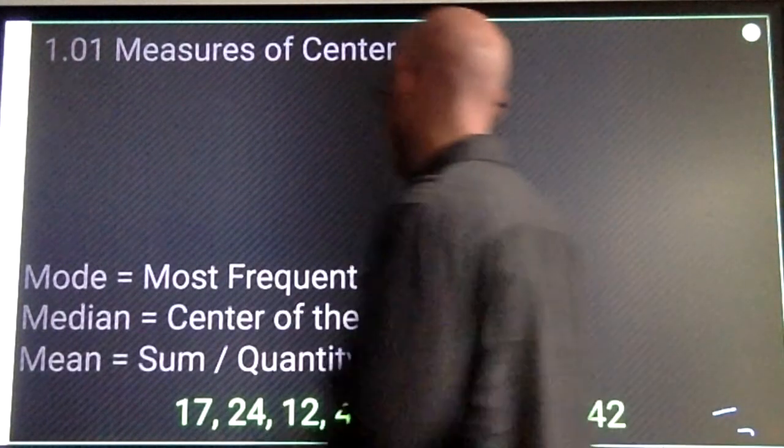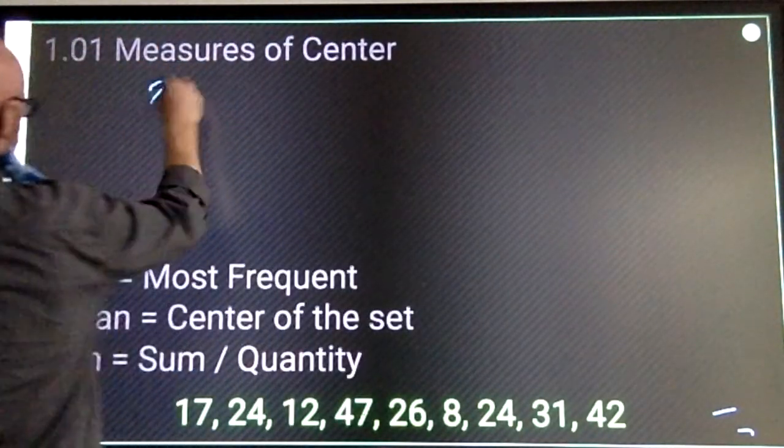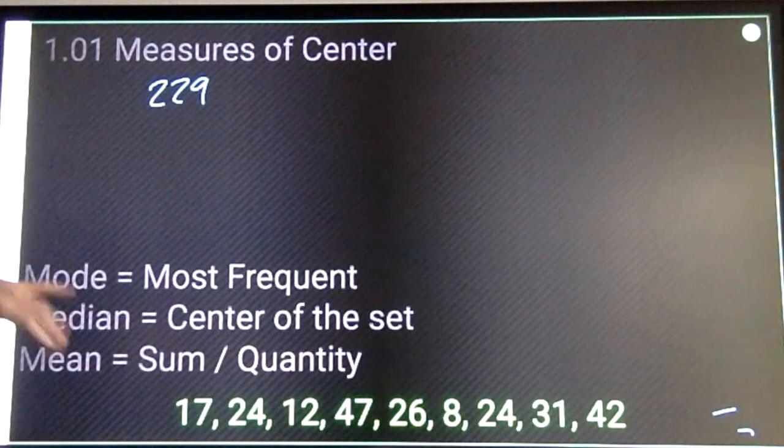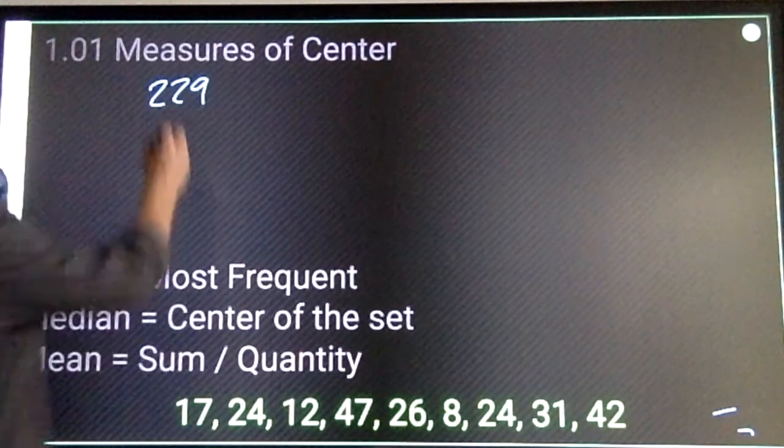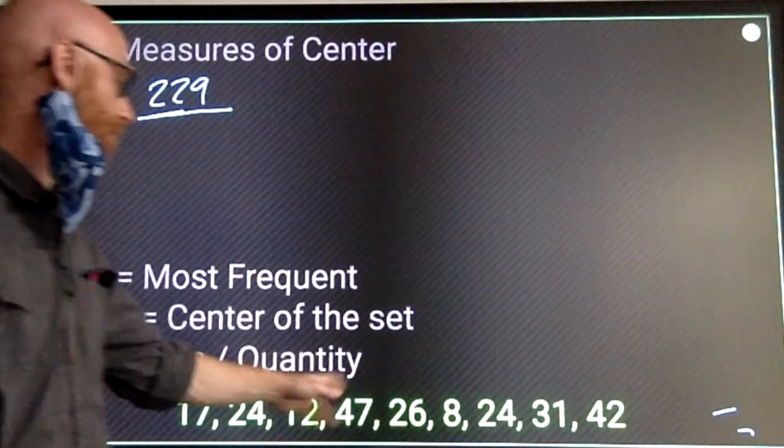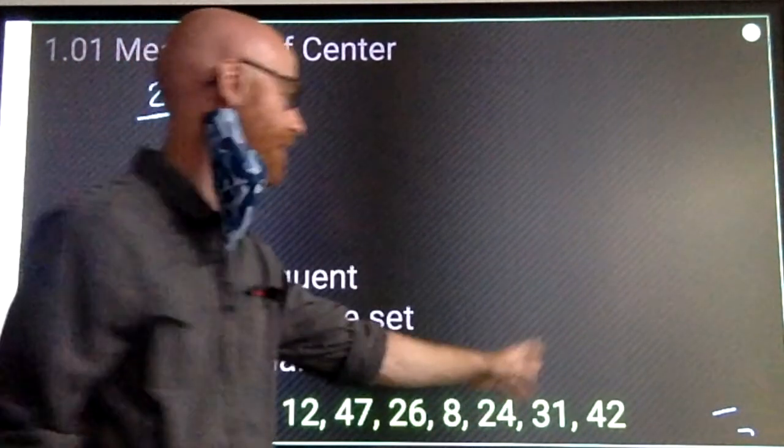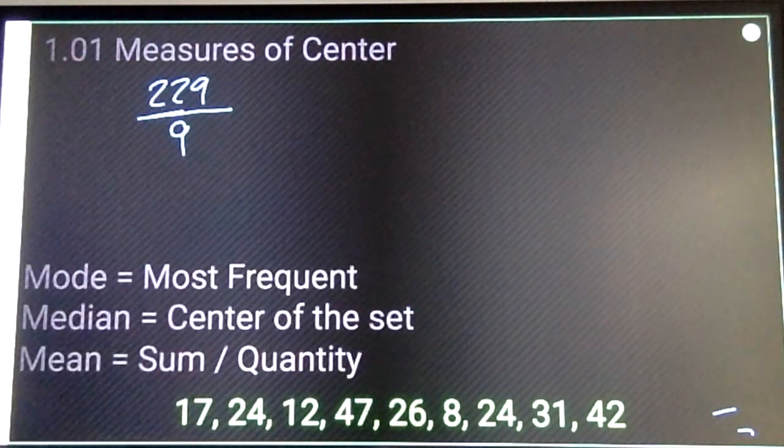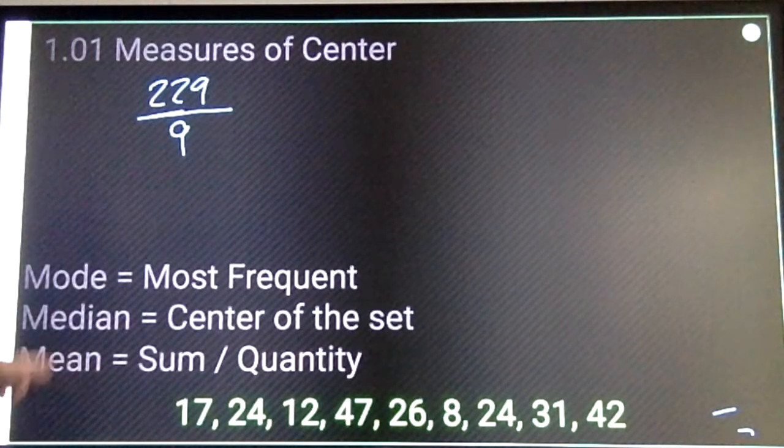If I add these numbers up, the sum is 229, unless I add it incorrectly, in which case, feel free to let me know in class. And I'll divide that sum by 1, 2, 3, 4, 5, 6, 7, 8, 9. There are 9 numbers here. 229 divided by 9 gives me the mean.